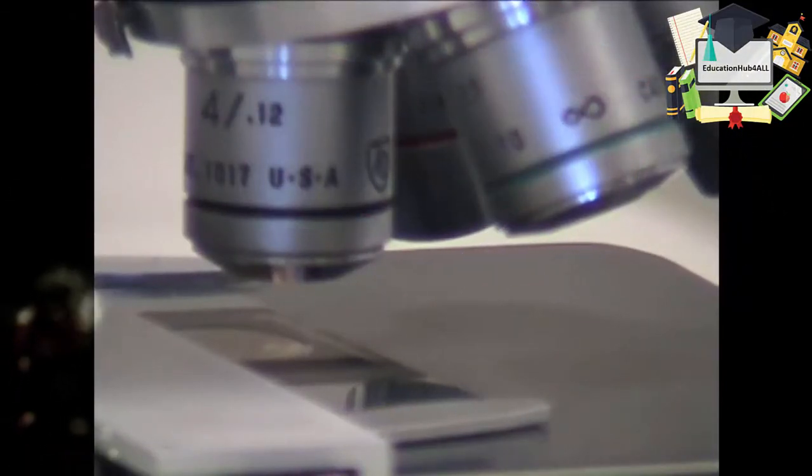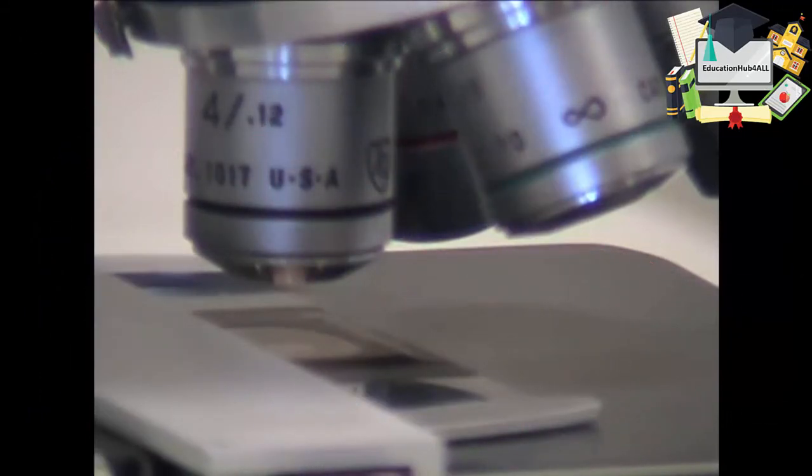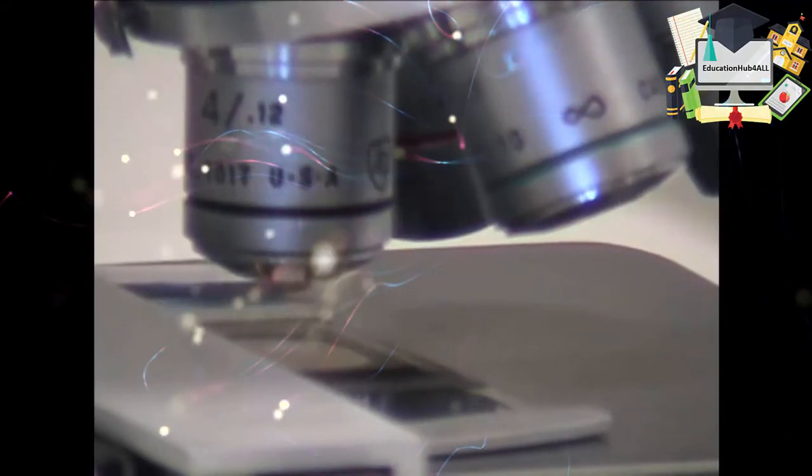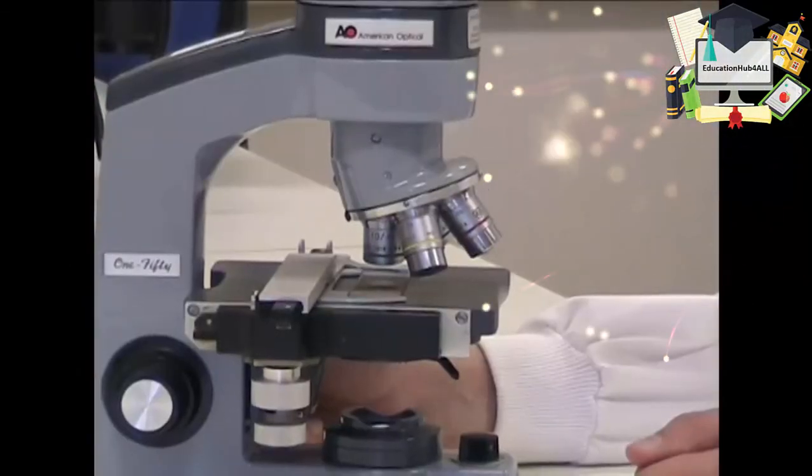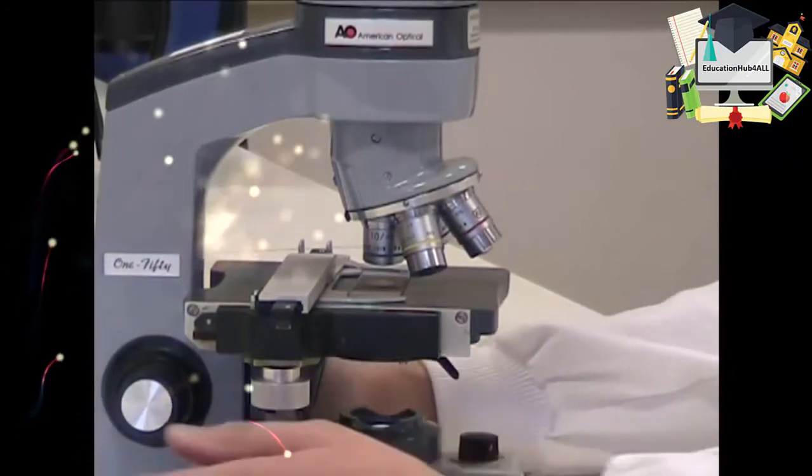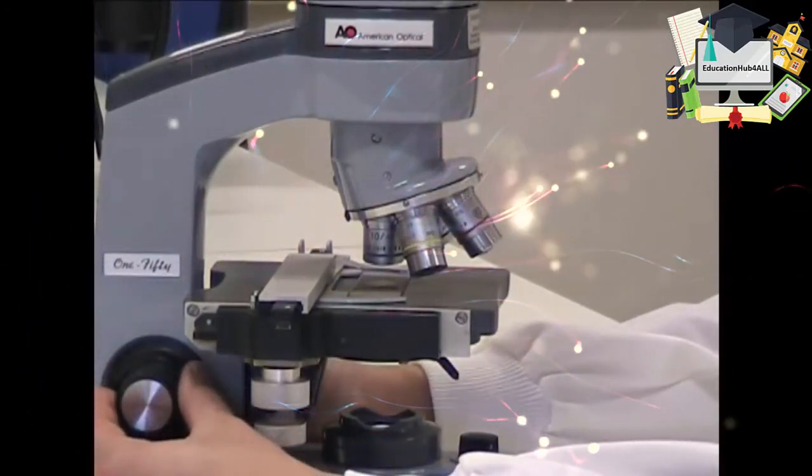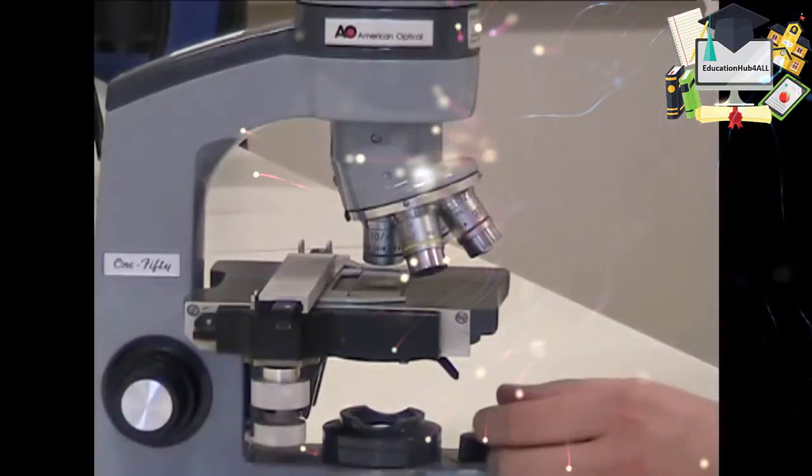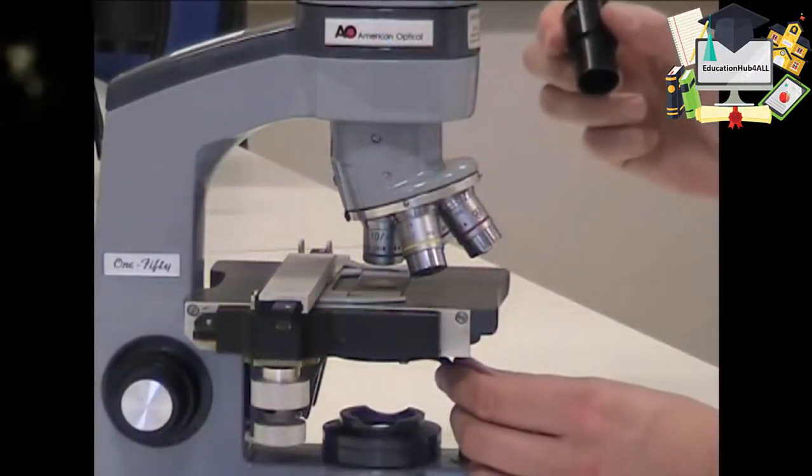If you want to move to a higher magnification, first of all use the stage controls to move the feature of interest to the centre of the field of view. Then move the objective lens around, in this case to the 10x lens. Each time you change magnification you'll need to slightly readjust the fine focus and also readjust the iris diaphragm.